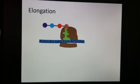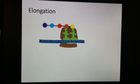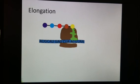Now the average protein in a eukaryote has about 400 amino acids. So in my picture here, so far I only have five, so I've simplified it quite a bit. And this is elongation.